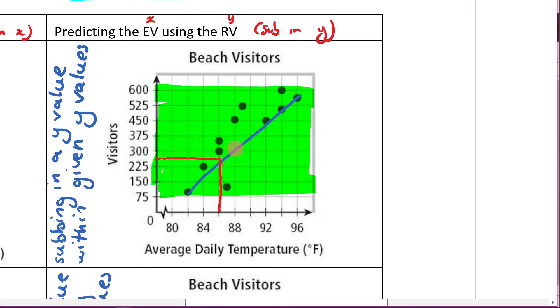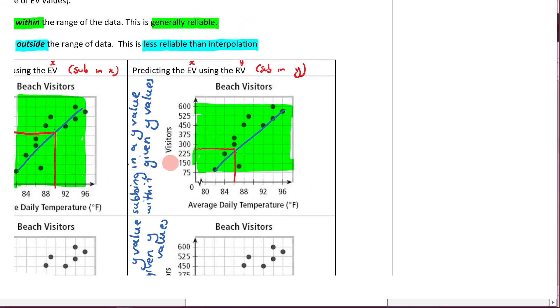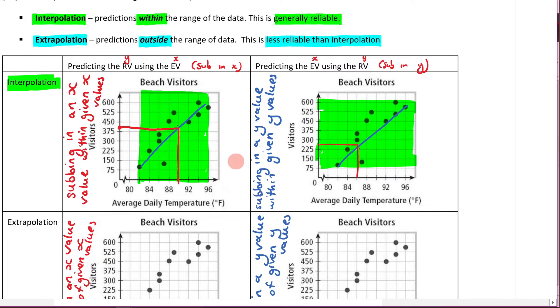So if I had this many people come, I would predict a temperature of about that. So again, we're predicting inside. It's interpolation. These are the accurate ones. Interpolation is generally reliable.